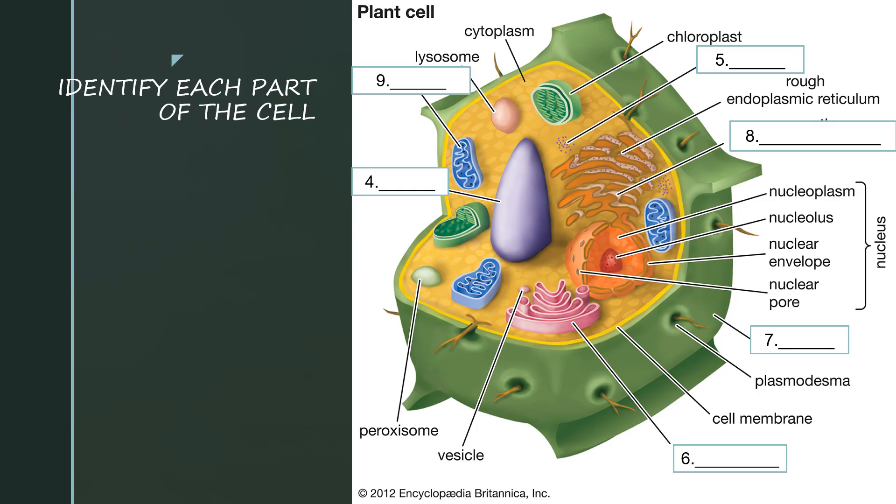In number four, you need to identify each part of the cell. Please identify what organelle is this. Identify what organelle is this. And number five, what organelle is this. And number six, this one. Seven, this one. And number eight, this one. Number nine, this one. Take note class, please memorize all these parts of the cell. The organelles. These are the organelles found in the cell.